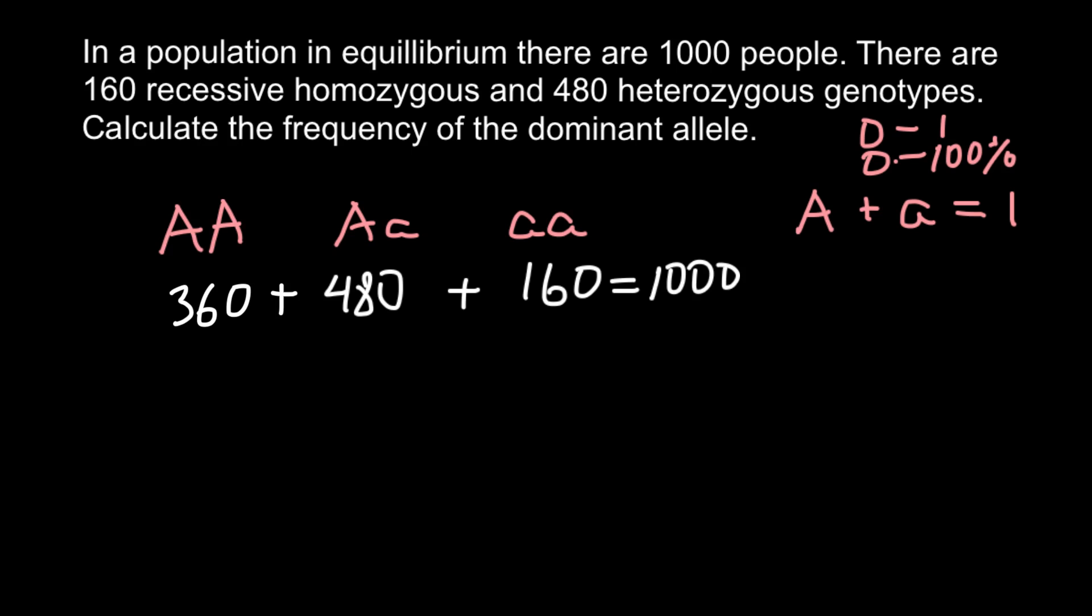So when we add all these three numbers we are going to get 1000. So how to find frequency of the dominant and recessive allele? It is very easy.